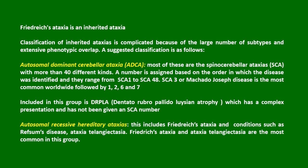Friedrich's Ataxia is an inherited ataxia. Classification of inherited ataxias is complicated because of the large number of subtypes and extensive phenotypic overlap. Suggested classification is as follows: autosomal dominant cerebellar ataxia — most of these are the spinocerebellar ataxias, with more than 40 different kinds. A number is assigned based on the order in which the disease was identified, and they range from SCA1 to SCA48.